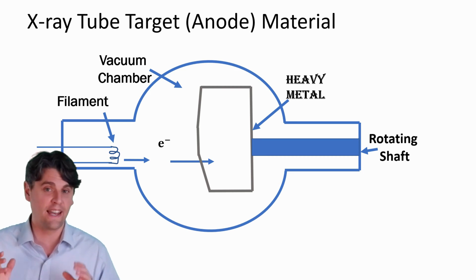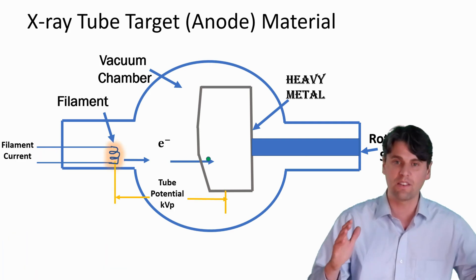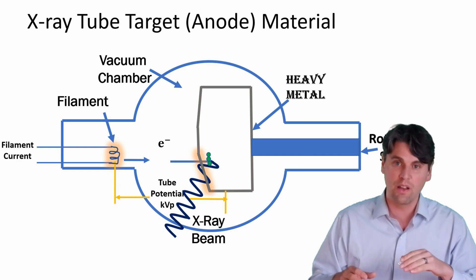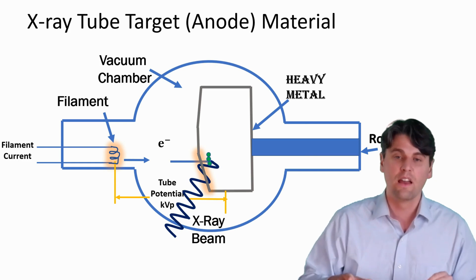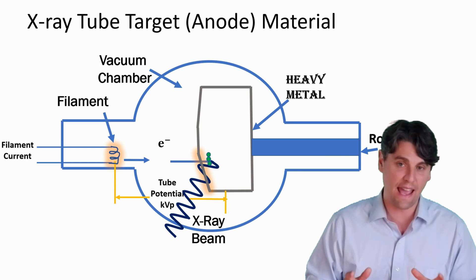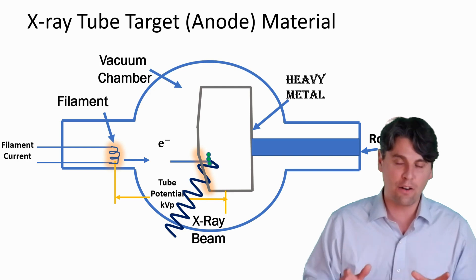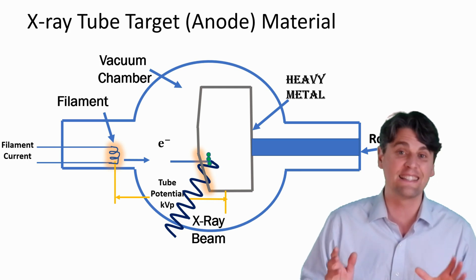Next thing we're going to talk about is the target material and its influence on the beam quality. So if we remember, we have electrons, they come out of a hot filament, and then they're going to get slammed into the anode. They're going to get pulled across by a KVP, and then they're going to get slammed into the anode. As they travel into the anode, they will interact in characteristic and bremsstrahlung interactions, and out come the x-ray photons. Those x-ray photons have to pass through the anode material. Since they have to pass through the anode material on their way out, that anode material is actually going to influence the quality of the beam because some of those x-ray photons are going to get attenuated within the anode material itself.